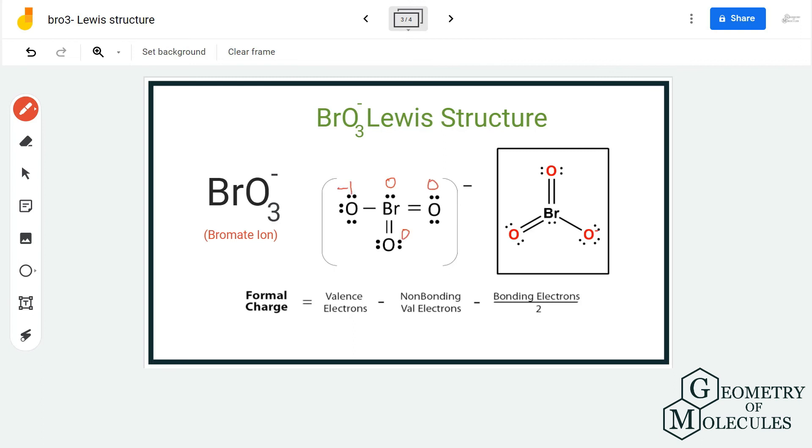Always make sure to mention the charges. Remember, the oxygen atoms forming double bonds with bromine will have a charge of zero, and the oxygen not forming a double bond will have a charge of -1.